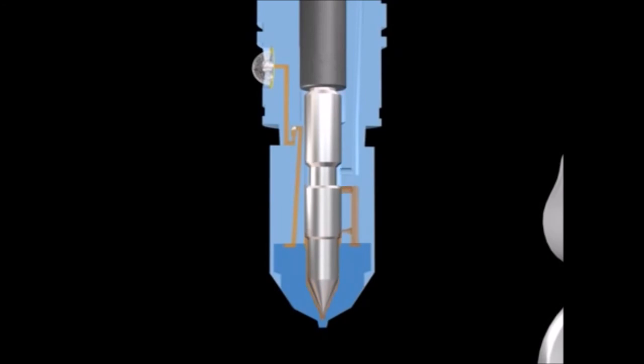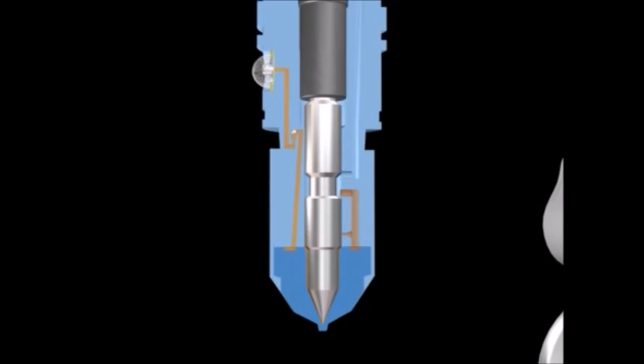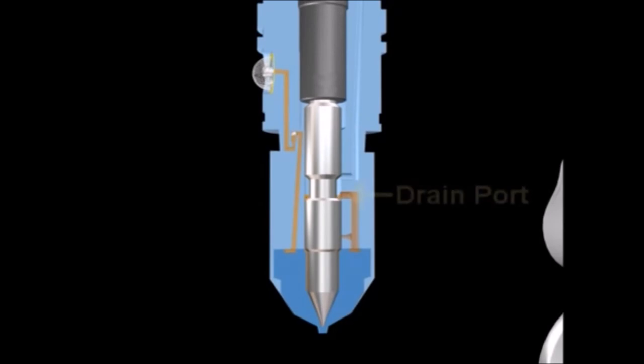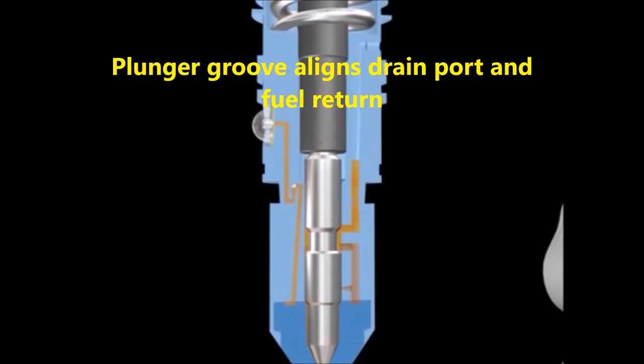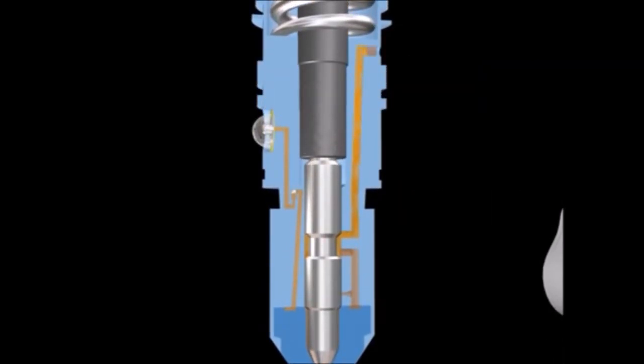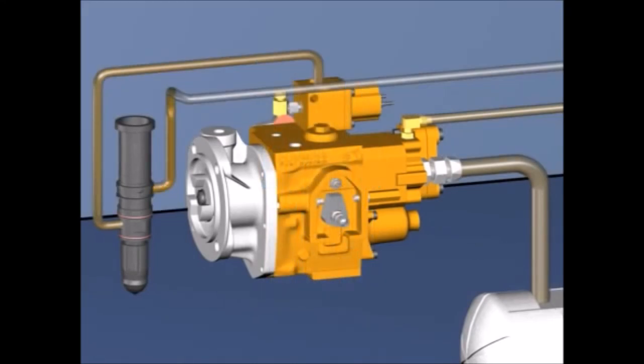With injection completed and the injector plunger bottomed in the cup, the cam roller is now on the outer base circle of the camshaft injector lobe. While this is happening, the drain groove on the injector plunger has aligned the drain passages in the injector barrel, permitting fuel to flow out of the drain groove and return to the tank.